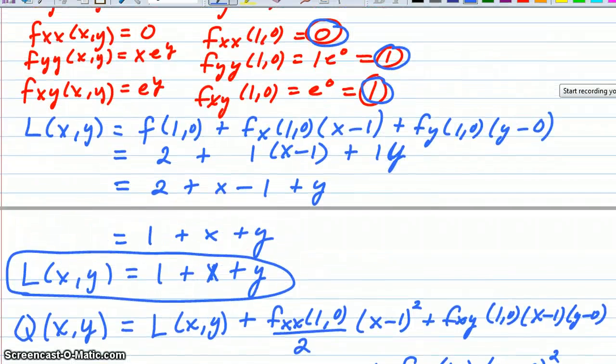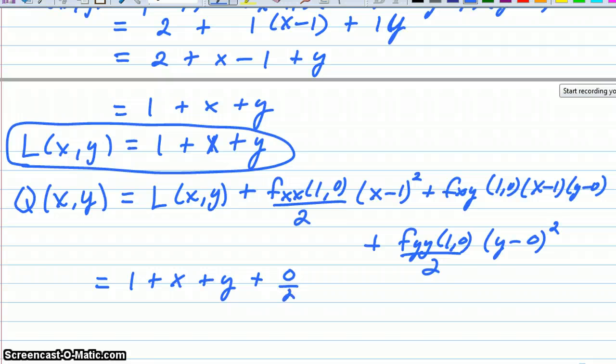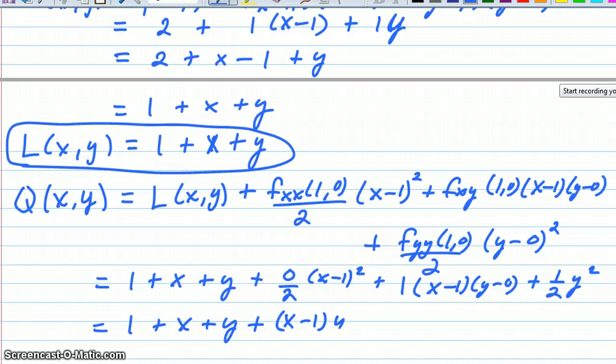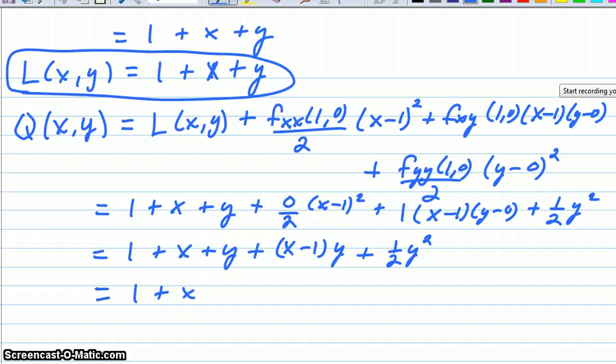So we're going to use those values. So again, f sub xx at (1,0) is 0, so we have 0 over 2 times (x minus 1) squared. Plus 1 times (x minus 1) times (y minus 0), plus 1 over 2 times y squared. This equals 1 plus x plus y. First term drops out because it's just a 0 times the whole thing. So then we have plus (x minus 1) times y plus 1 half y squared. Here we have 1 plus x plus y plus xy minus y plus 1 half y squared. The two y's cancel out here.